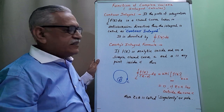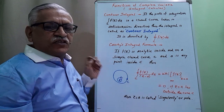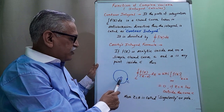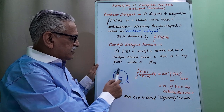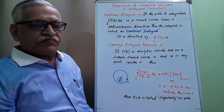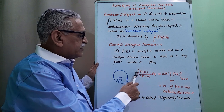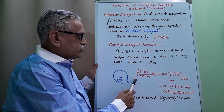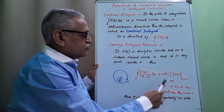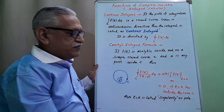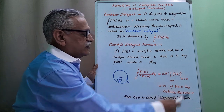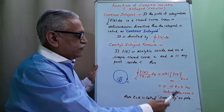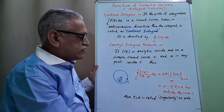If f(z) is analytic inside and on a simple closed curve C, and 'a' is any point inside C, then the integration of f(z) divided by (z minus a) with respect to z over that closed curve C is equal to 2πi multiplied by f(a), if that point lies inside or on that curve. Or its value is 0 if that point z = a lies outside the curve C.